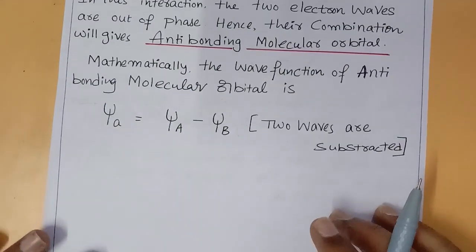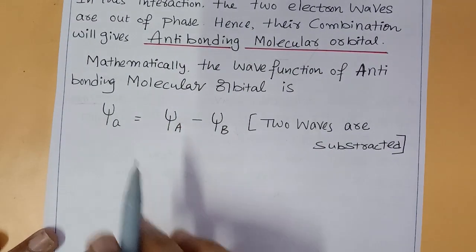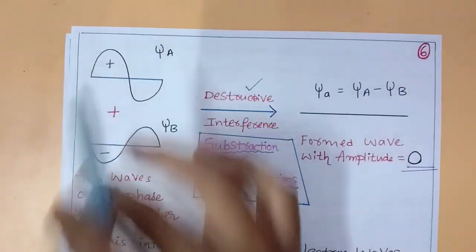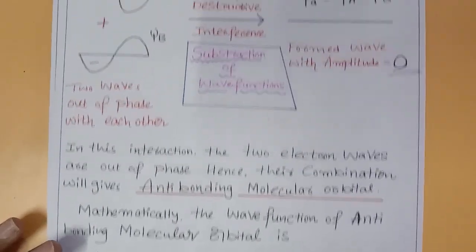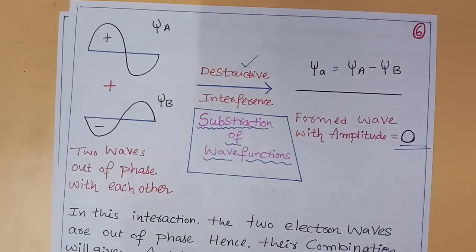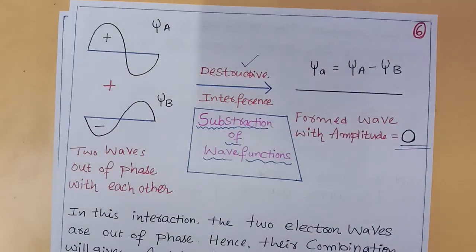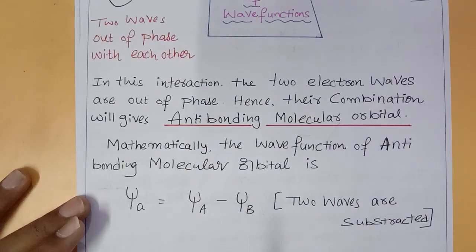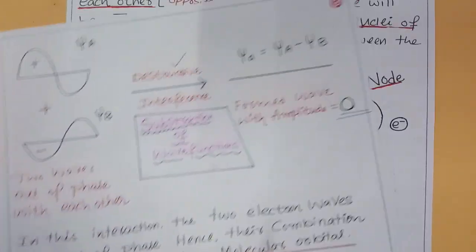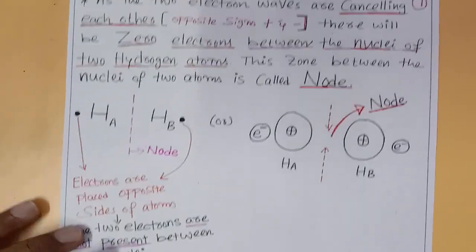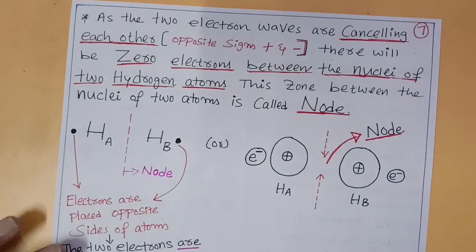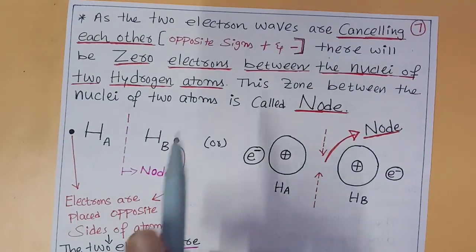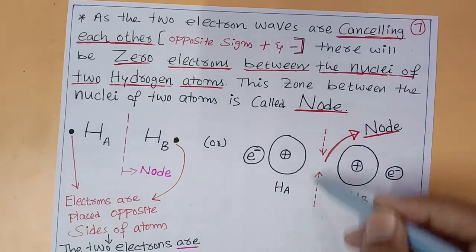We subtract the two waves because they have opposite signs. Because of opposite signs, they cancel each other, and one molecular orbital is formed — that is the anti-bonding molecular orbital. As the two electrons cancel each other because of opposite signs, there will be zero electron density between the two nuclei.